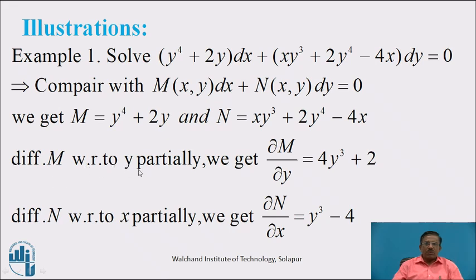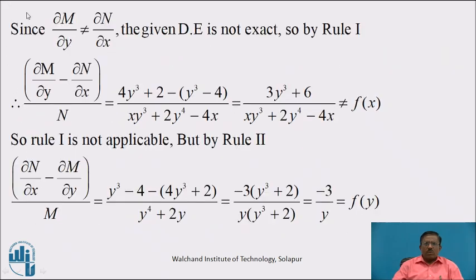Differentiating M with respect to y, we get ∂M/∂y = 4y³ + 2. Differentiating N with respect to x partially, we get ∂N/∂x = y³ - 4. Since ∂M/∂y ≠ ∂N/∂x, therefore the given differential equation is not exact.